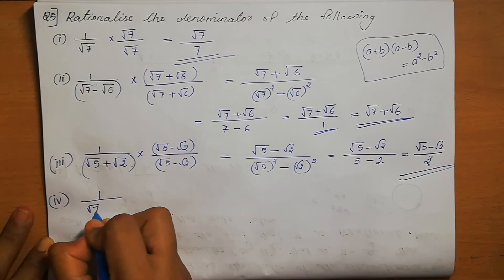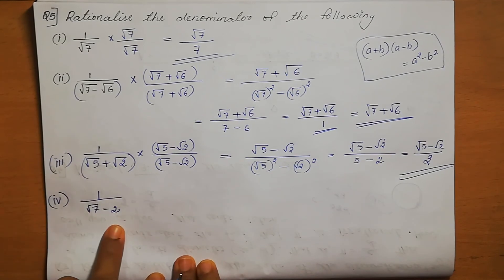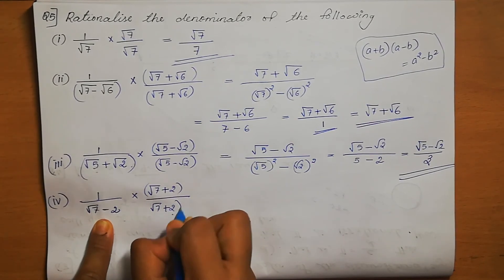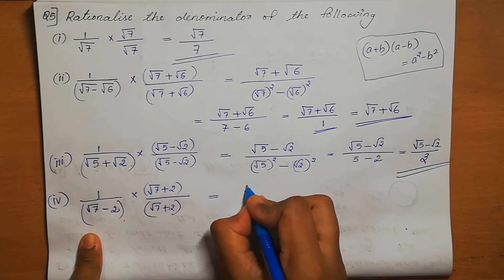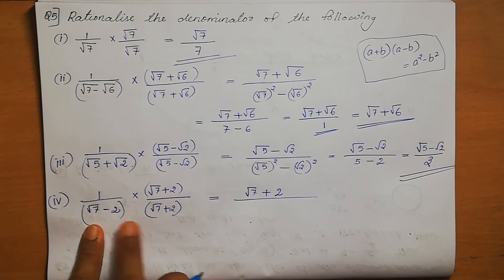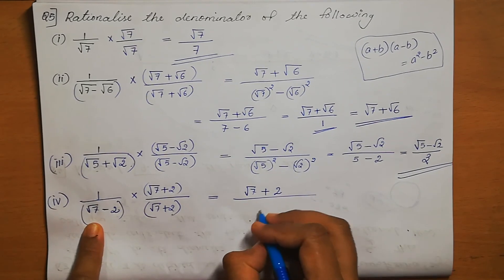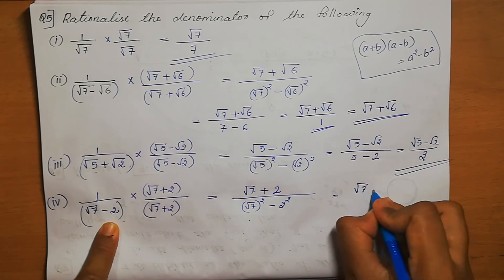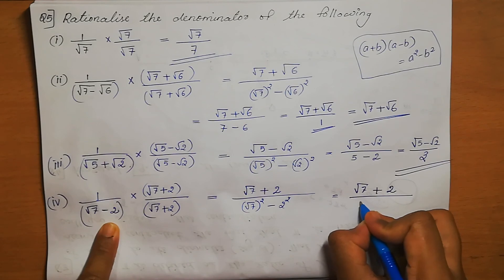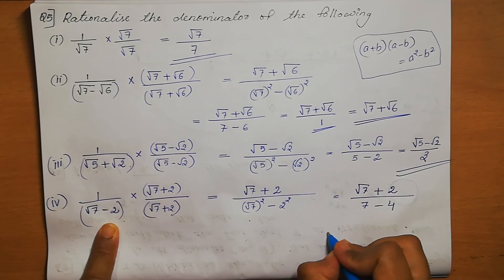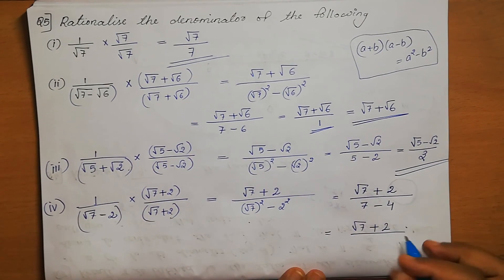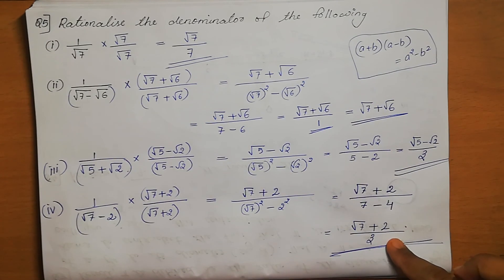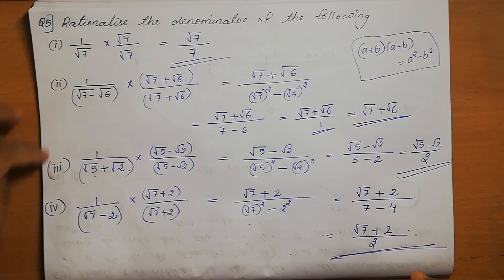Fourth one: 1 by (root 7 minus 2). We change the sign and multiply both numerator and denominator by (root 7 plus 2). Numerator becomes root 7 plus 2. Denominator is in the form (a + b)(a - b), where a is root 7 and b is 2. Root 7 squared is 7 and 2 squared is 4, so 7 minus 4 equals 3. The answer is (root 7 plus 2) divided by 3. The denominator is now rationalized.